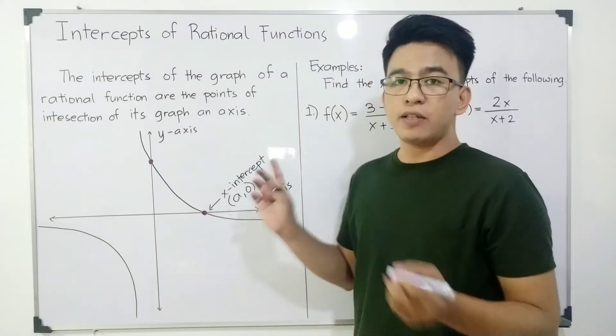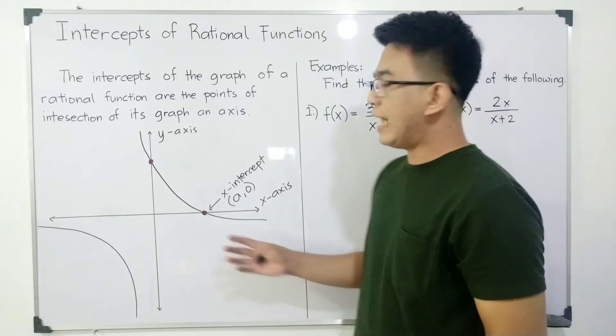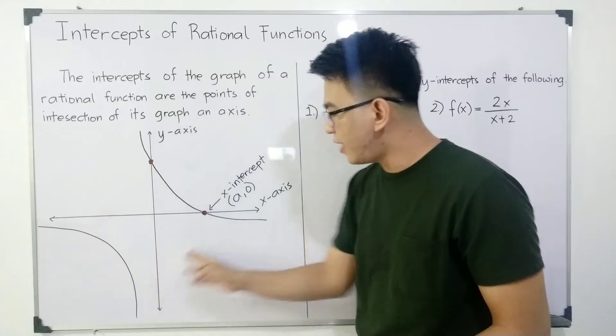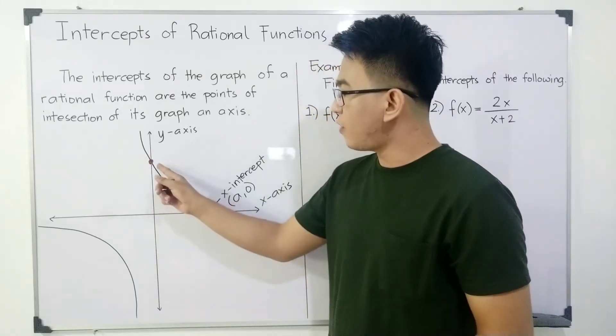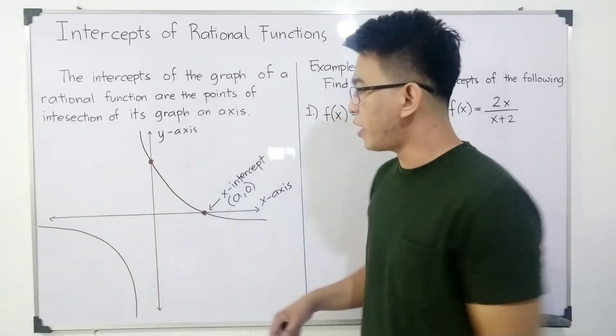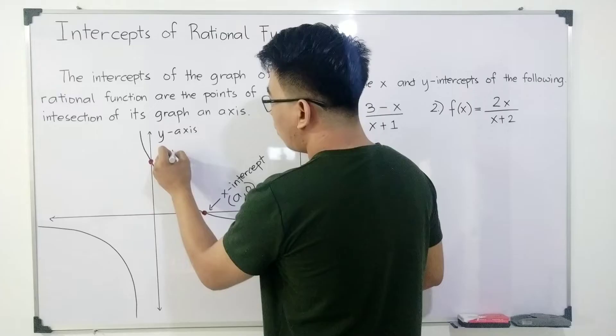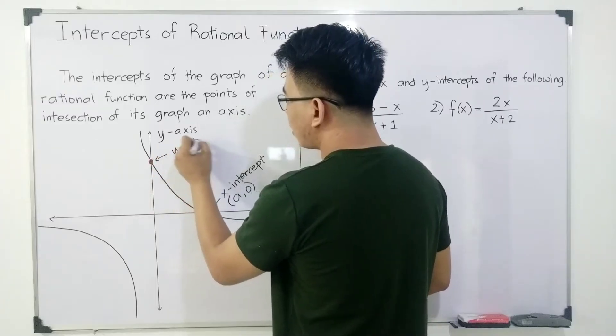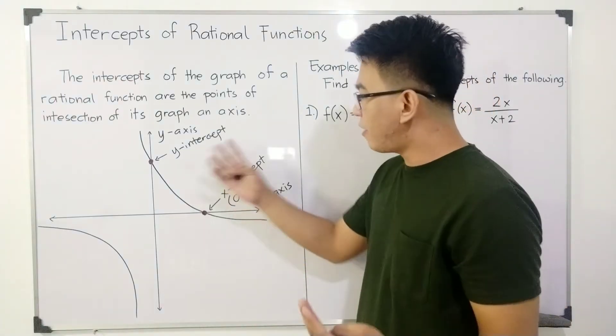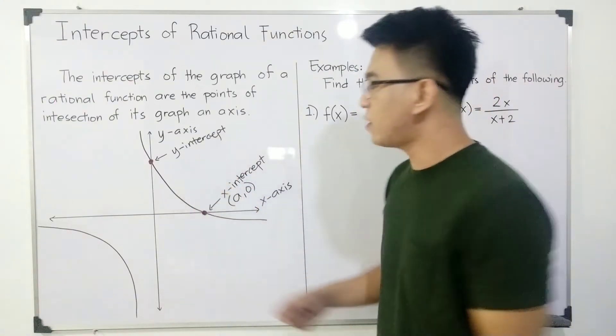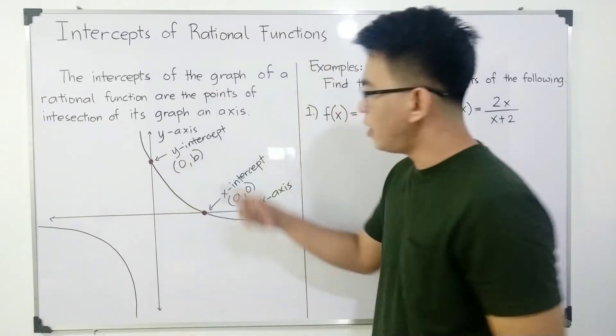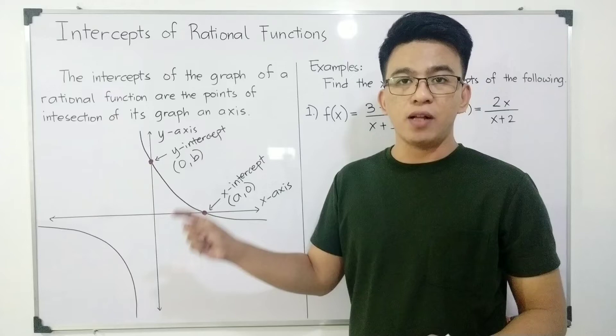And now, as for the y-intercept, given your y-axis and this is the graph of the rational function, as you can see, we have here a point of intersection, which is what we call the y-intercept. The coordinates of our y-intercept are (0, b), wherein your x is equal to 0.